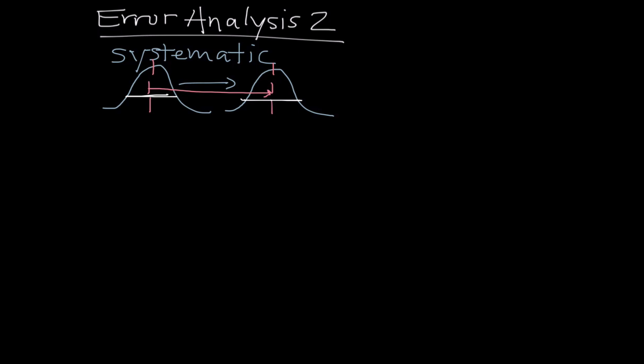Now what does systematic error actually look like experimentally? Well, it all boils down to the idea, in my mind, of miscalibration. Miscalibration is the problem and there's a disconnect really between the true value or at least what we think the true value is and the measured values.